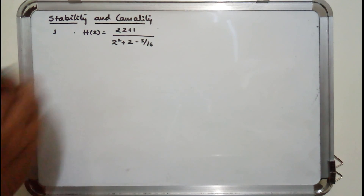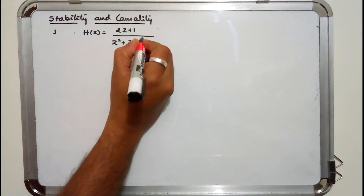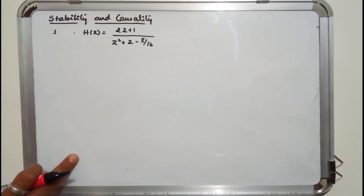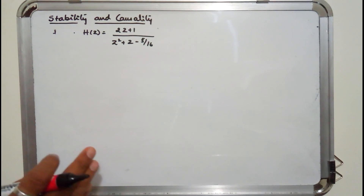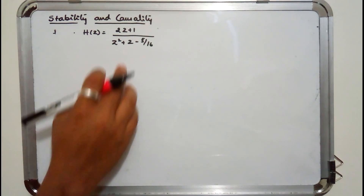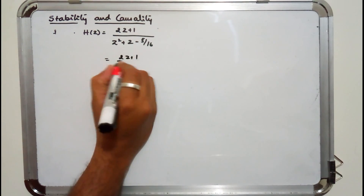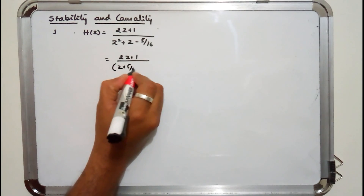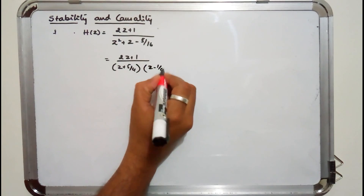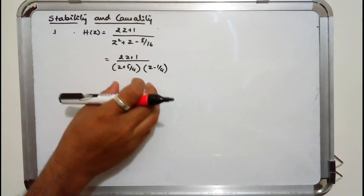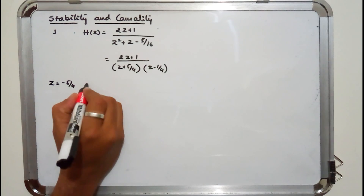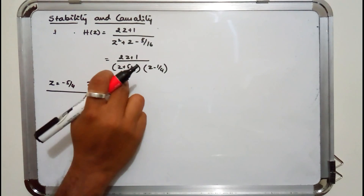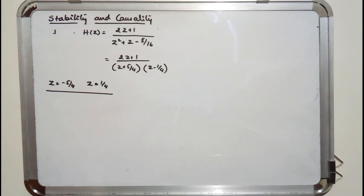We are given the system function H(z) = (2z + 1) / (z² + z − 5/16). We need to check whether the system is causal and stable. The system will be causal and stable if all poles lie inside the unit circle. Factorizing the denominator gives (z + 5/4)(z − 1/4), so the poles are z = −5/4 and z = 1/4.